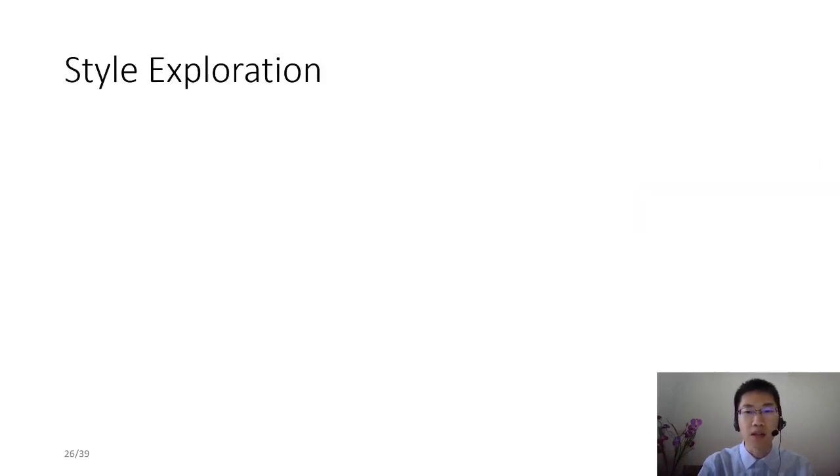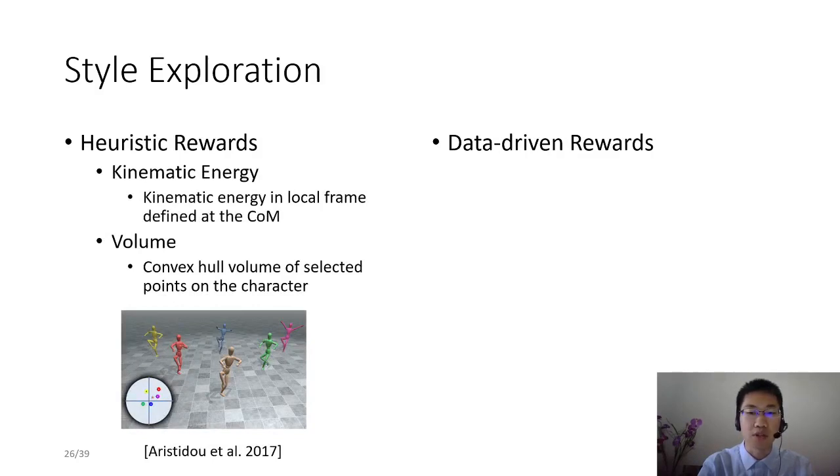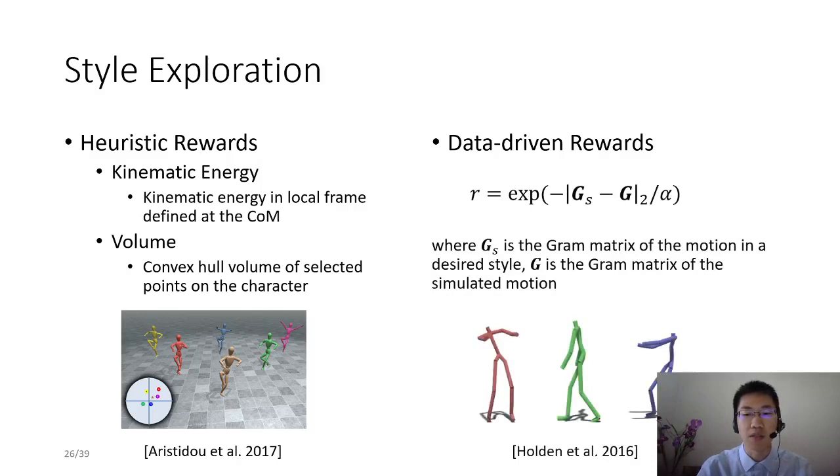When exploring stylized motions, we simply multiply binary survival reward with style reward. Since binary survival reward is one, the final reward is just the style reward itself. We've designed two kinds of style rewards: heuristic rewards and data-driven rewards. Heuristic rewards encourage or discourage a selected feature quantity, such as kinematic energy or convex hull volume of selected points on the character. These features are selected according to previous work on motion variation parameterization. Data-driven rewards measure the distance between gram matrices of style reference and simulated motion, and encourage them to be as similar as possible. We directly use the pipeline proposed by Holden and his colleagues to extract gram matrix from motion clips.